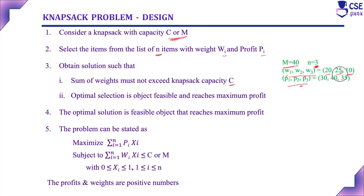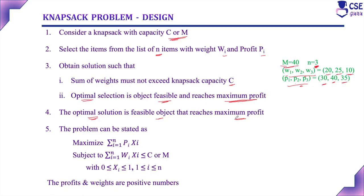We choose combinations of items whose total weight does not exceed the knapsack capacity of 40. For example, W1 and W2 sum to 45, exceeding capacity; W1 and W3 sum to 30; W2 and W3 sum to 35. The optimum solution is a feasible set of objects that maximizes total profit. Among the three items, the second has the highest profit, the third the next highest, and the first the least. We choose the combination that is feasible and maximizes total profit.